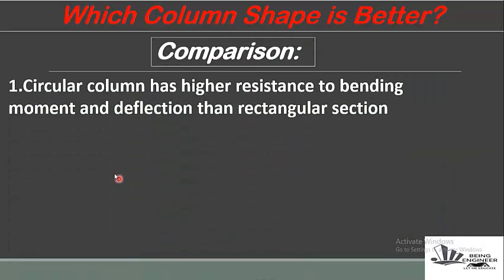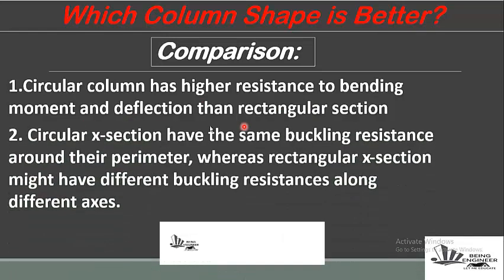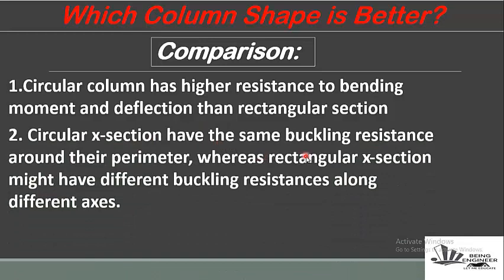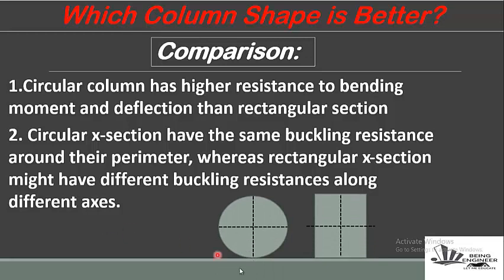The first comparison point: circular columns have higher resistance to bending moment and deflection than rectangular sections. Circular cross-sections have the same buckling resistance around their perimeter, whereas rectangular cross-sections may have different buckling resistances along different axes. The centroidal axis of a circular column has equal distance from all edges, giving it higher resistance to bending compared to the rectangular one.